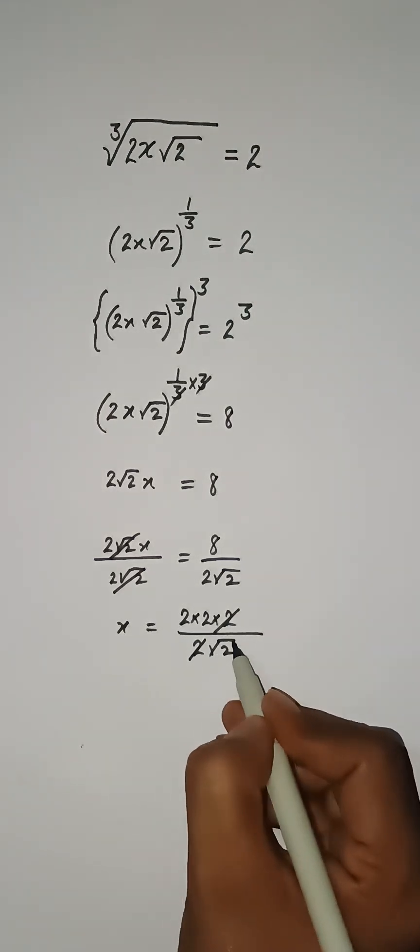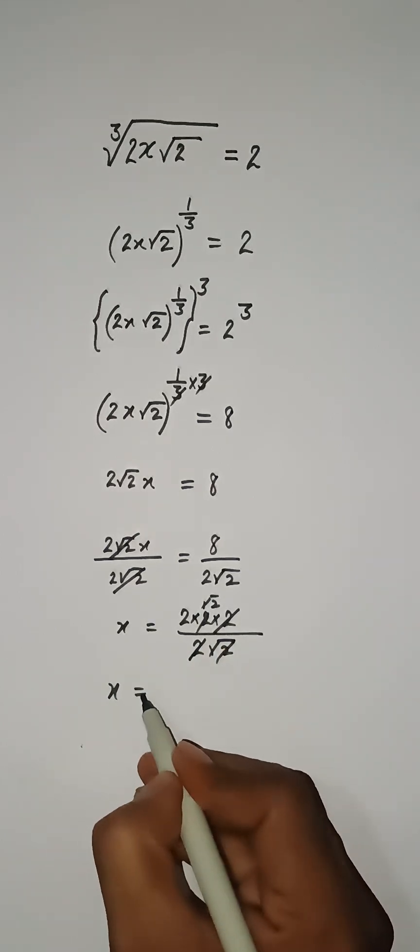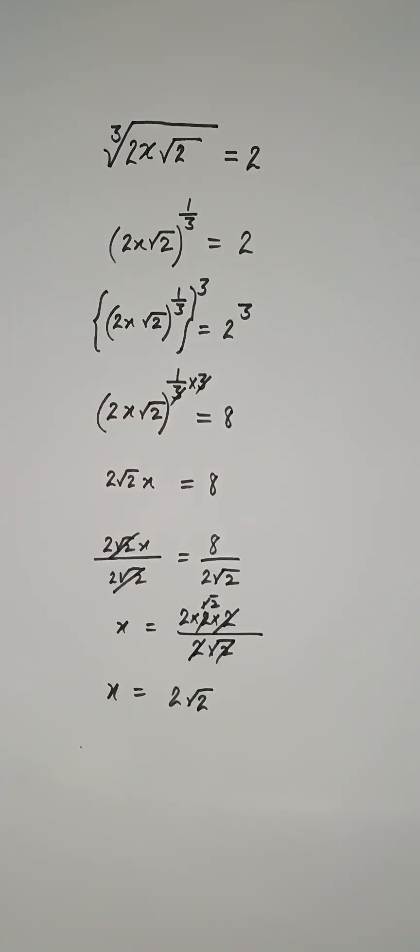So this 2 will cancel. So this 2 will cancel. Here we have root under 2. So at the end we can write we have 2 root under 2 is the solution of this problem.